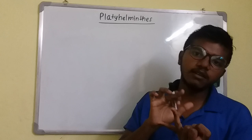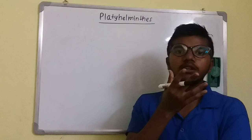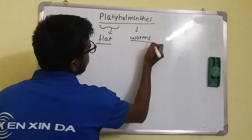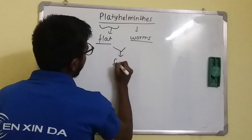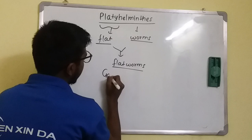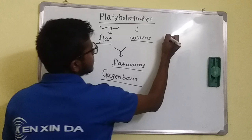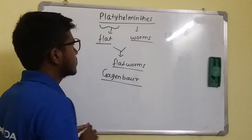Platyhelminthes is the third phylum after Porifera and Coelenterata. The term 'platy' means flat, and 'helminthes' means worms, so they are commonly known as flatworms. The term Platyhelminthes was coined by Gegenbaur. The number of species ranges up to 13,000.